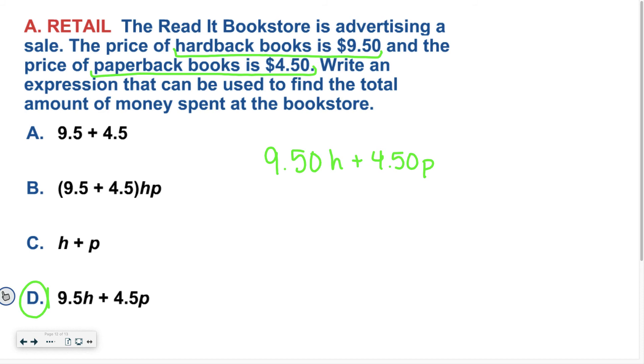Hopefully you ended up with 9.5H plus 4.5P to represent the hardcover and paperbacks. So when I wrote it, I included the zero there because we're talking about money. If you included the zero, great. If you didn't include the zero, that's also okay. They're both correct.